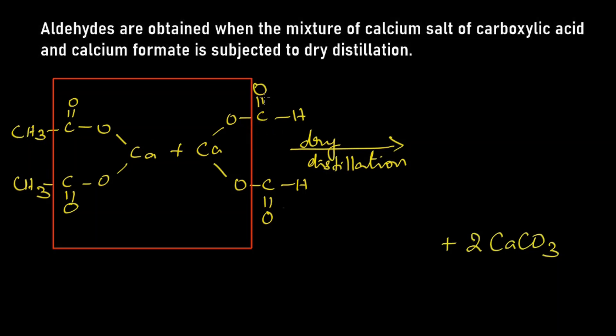What are the remaining things? CH3-C double bond O-H, CH3-C double bond O-H, and here CH3-C double bond O-H. Therefore, two molecules of acetaldehyde will be obtained. Let's write the name for the structures.